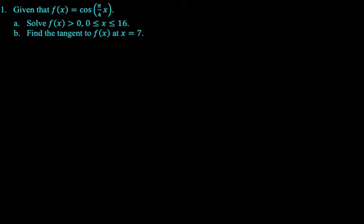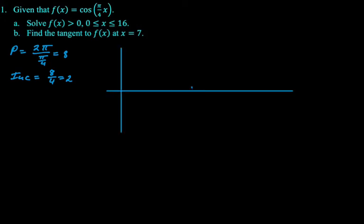So the period is gonna be 2 pi divided by b, b is pi over 4. So that's gonna be 8, which makes an increment of the graph, the period divided by 4, which is 2. And so I'm gonna set up my grid.